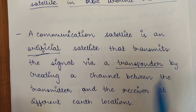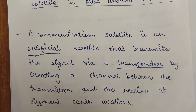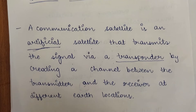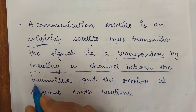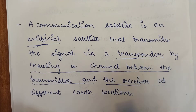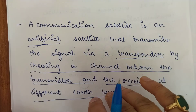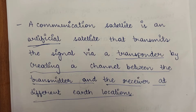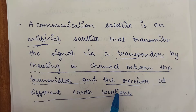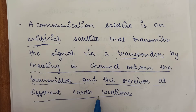Whatever signals are being transmitted through a communication satellite, it is via the transponders. A transponder creates a channel between the transmitter and the receiver at different Earth locations. So it creates a communication channel between senders and receivers who are at different locations of the Earth, and enables communication between them.